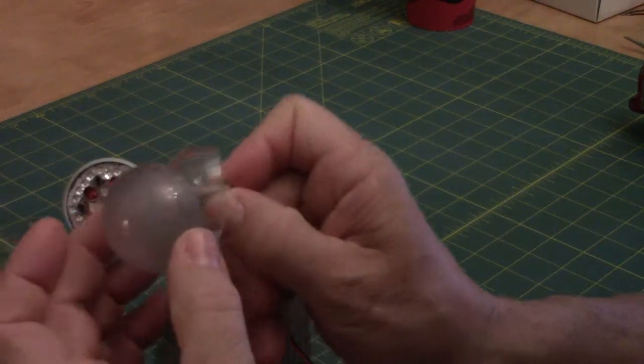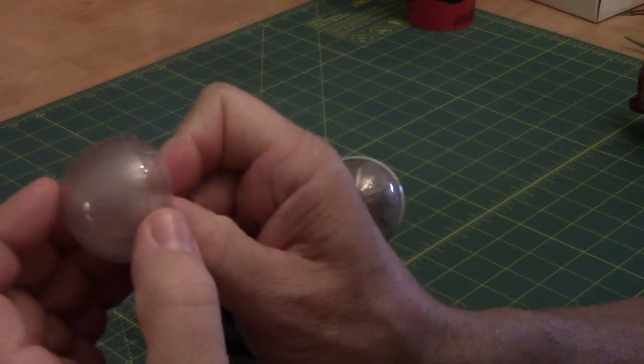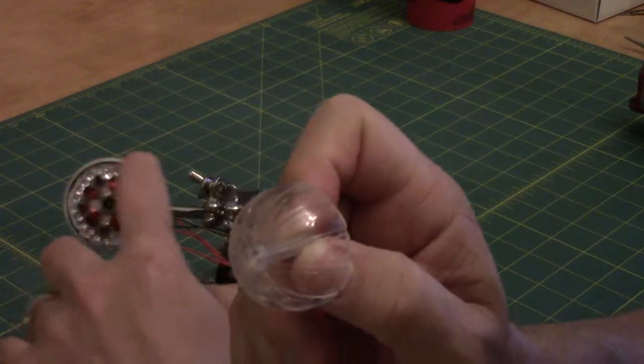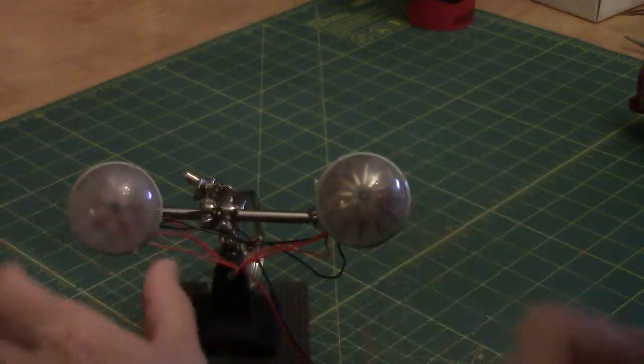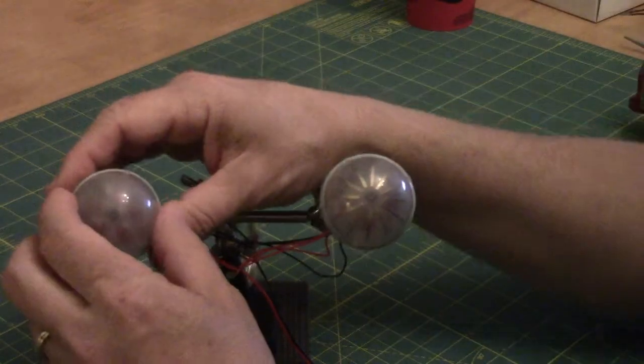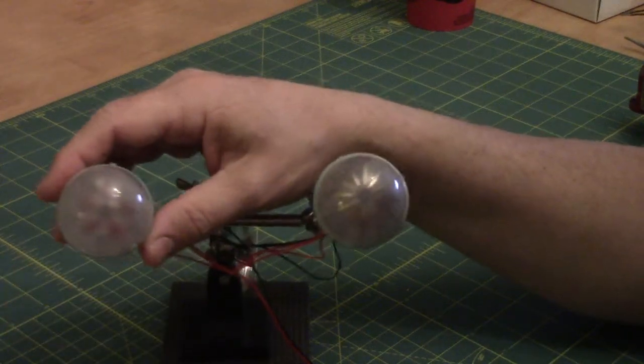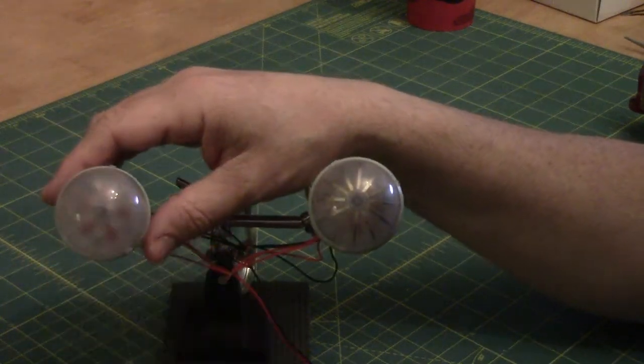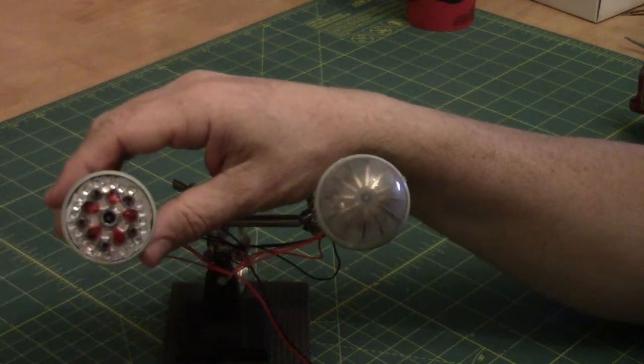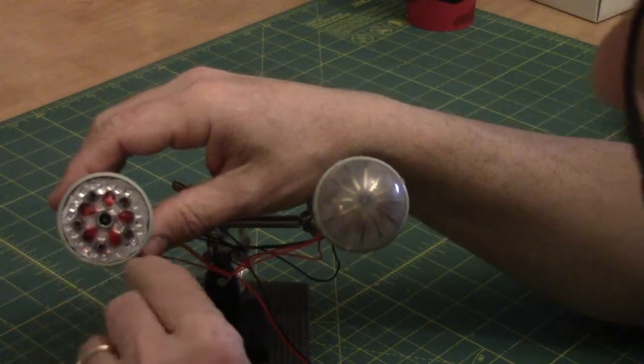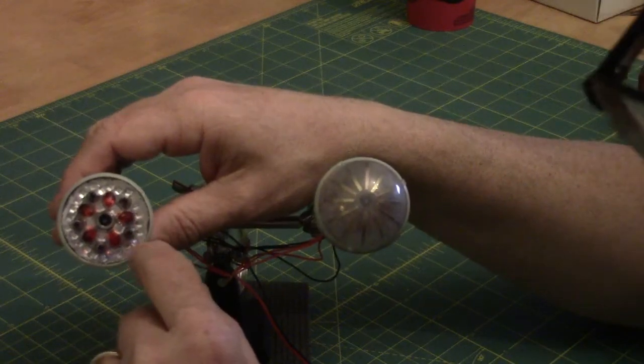The dome sits over and recesses inside and sits nice and snug, and it does sit pretty snug there. It takes a moment to get it out, which is a good thing, because if there's any jostling around, this dome is not going to fall out very easily.